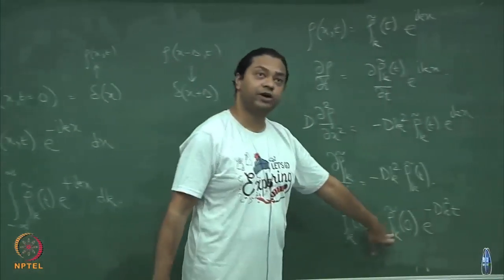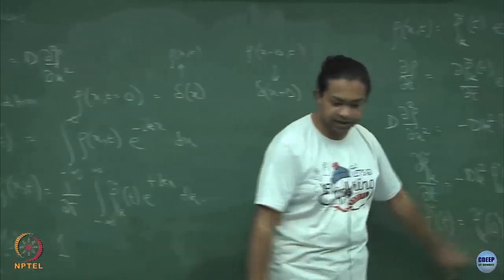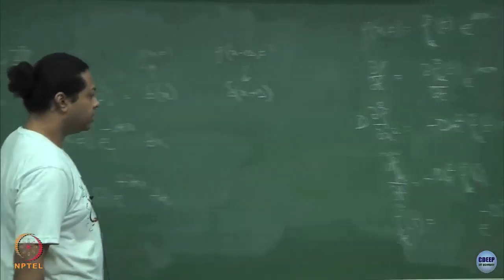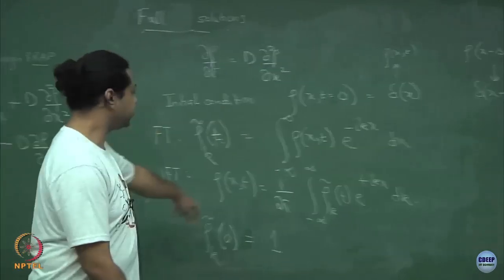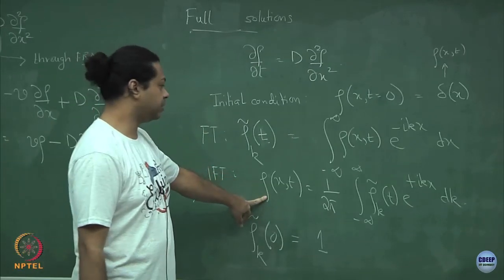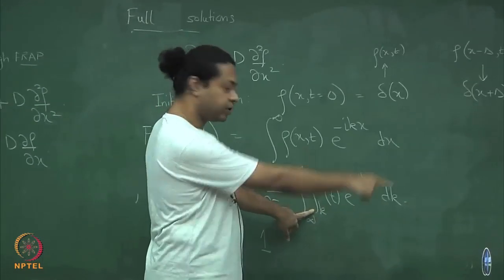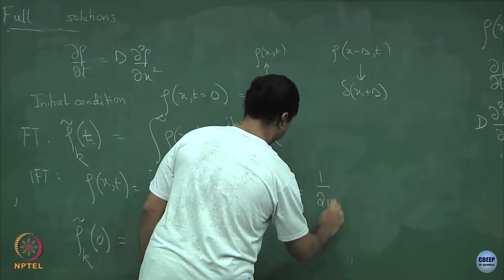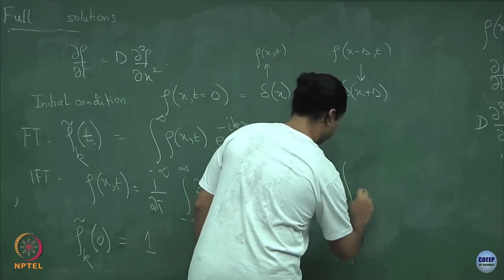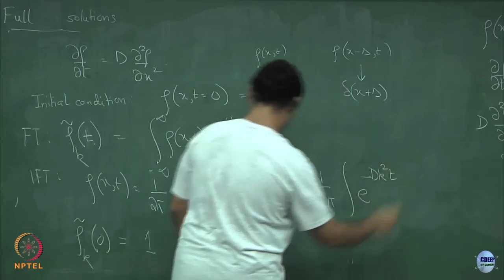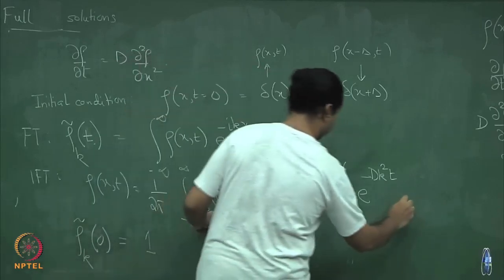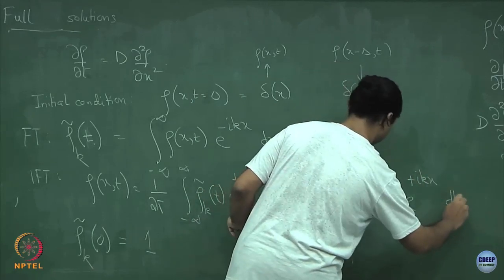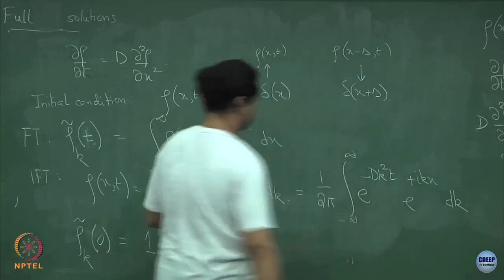Equating both sides gives d(rho tilde)/dt equals minus D·k squared · rho tilde(k,t). This has the solution rho tilde(k,t) equals rho tilde(k,0) · e^(minus D·k squared · t). Since rho tilde(k,0) equals 1, I now know rho tilde(k,t). Using the inverse Fourier transform, rho(x,t) equals (1/2pi) · integral of e^(minus D·k squared · t) · e^(plus i·k·x) dk.